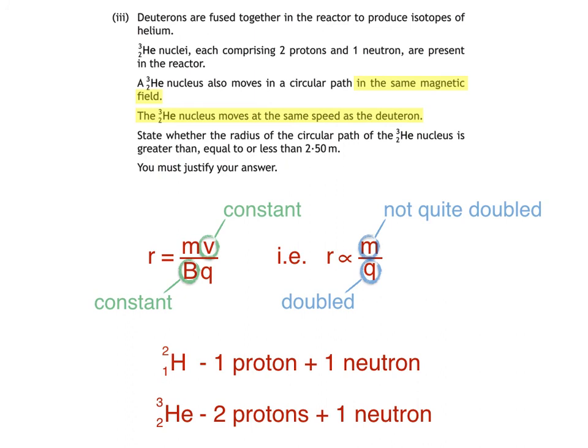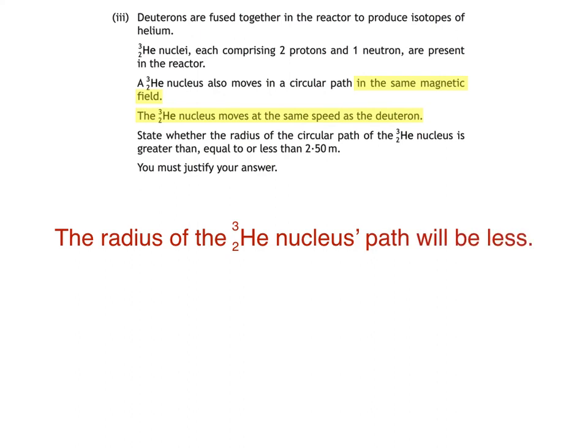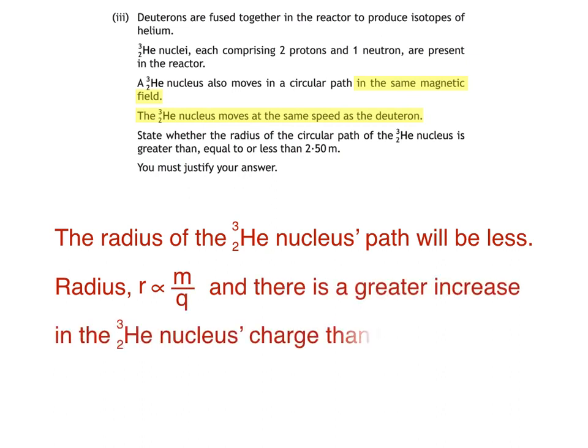Here's what we could write as an answer. The radius of the helium-3 nucleus' path will be less. And our justification, radius R is proportional to M over Q, and there's a greater increase in the helium-3 nucleus' charge than in its mass, compared with the deuteron, or words to that effect.